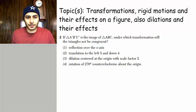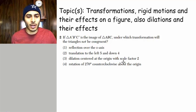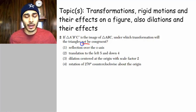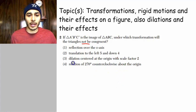Number two, if triangle A prime, B prime, C prime is the image of triangle ABC, under which transformation will the triangles not be congruent? For this question, you need to understand that only a dilation can produce an image that will not be congruent to the original image. Only a dilation can do that. So the answer is choice three.